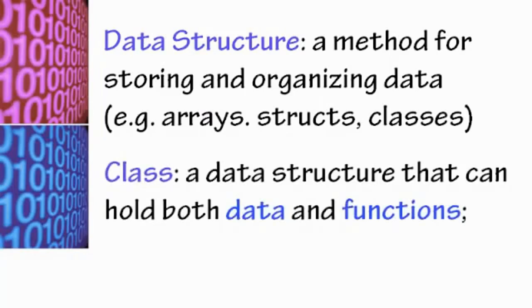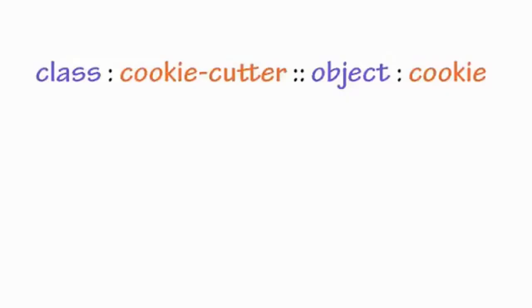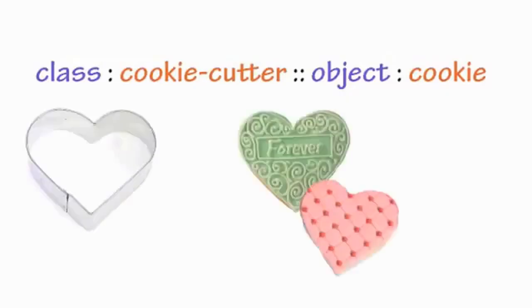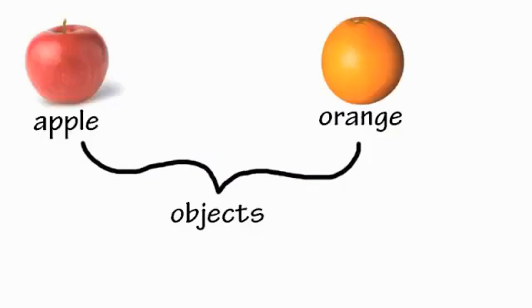A class is a kind of data structure that can hold both data and functions, and data of different data types, unlike an array. You can think of a class as a template for creating objects. The class itself isn't a real object, but it can produce objects. You can think of it as a cookie cutter creating cookies — there can be one class, but that class could have many instantiations, and each object has its own individual identity.